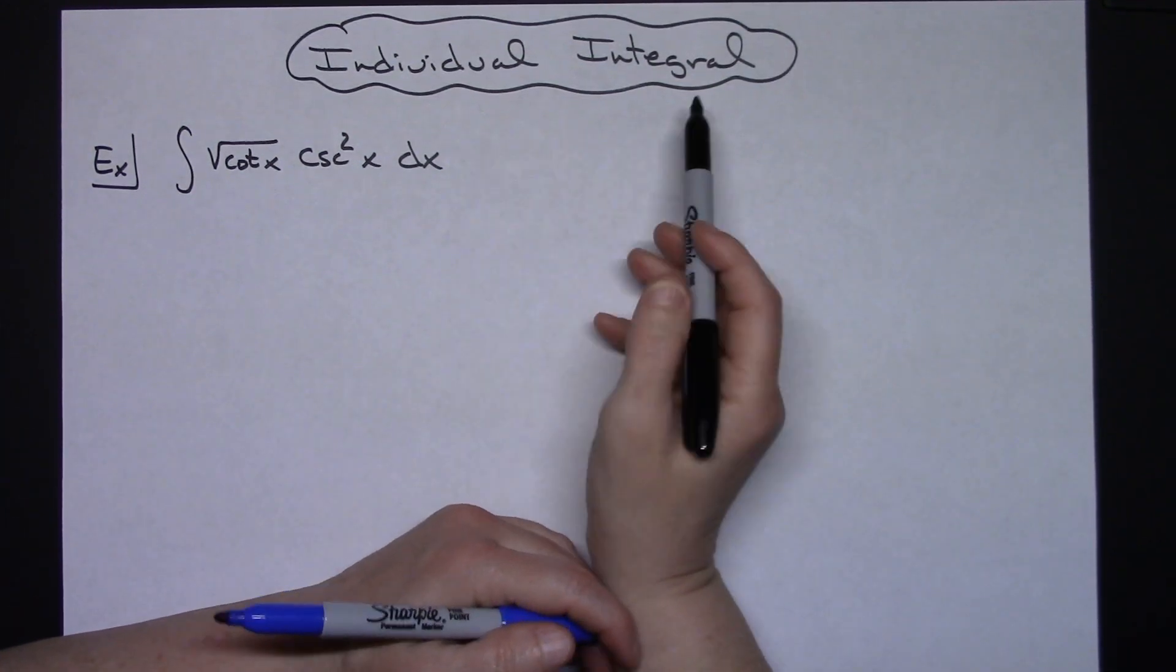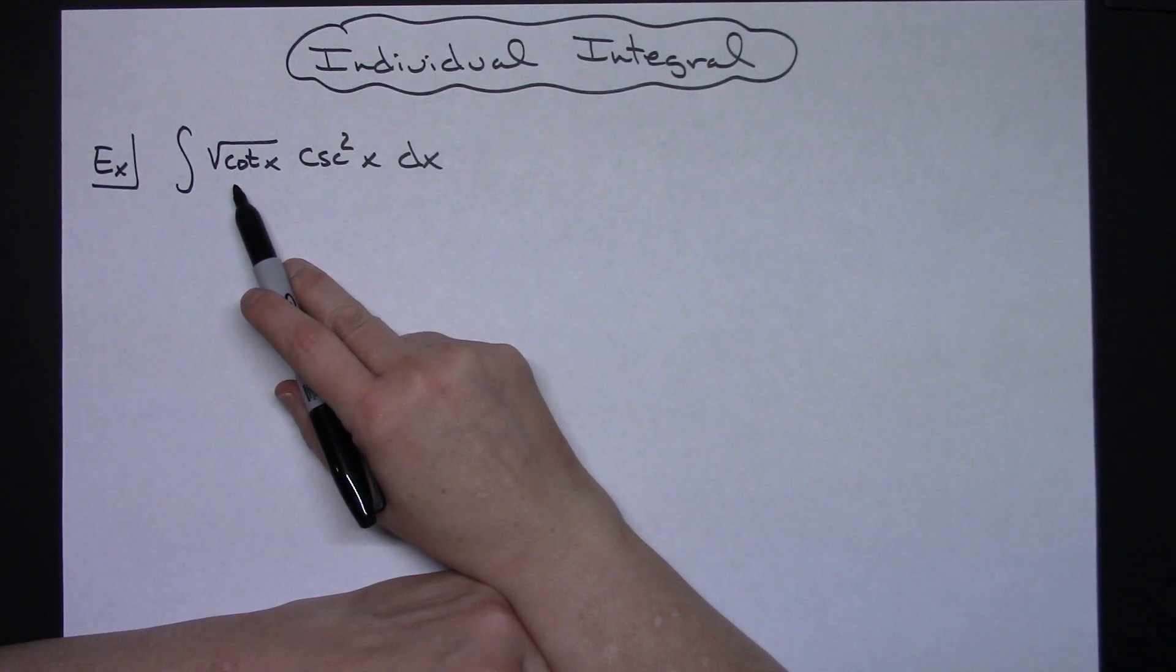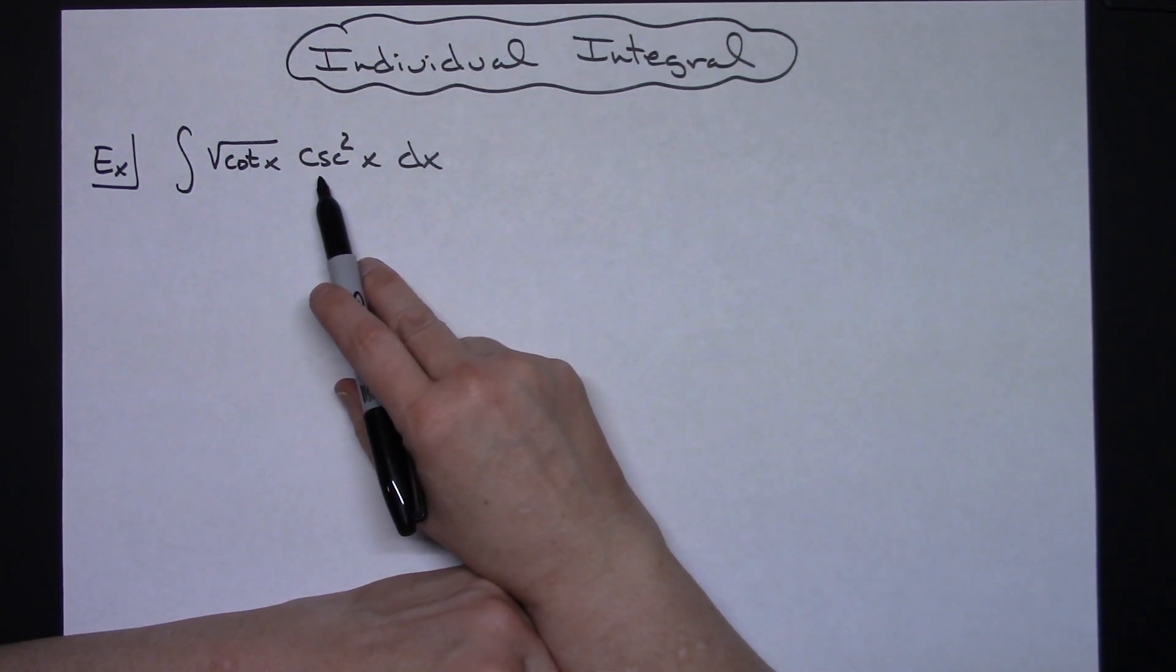In this video I'm going to be working on an individual integral. We're going to take a look at the integral of the square root of cotangent x cosecant squared x dx.